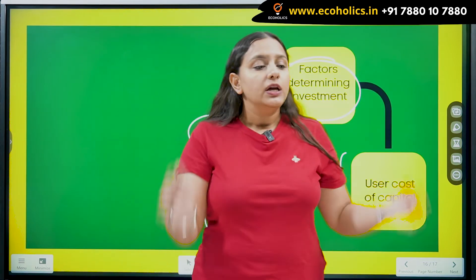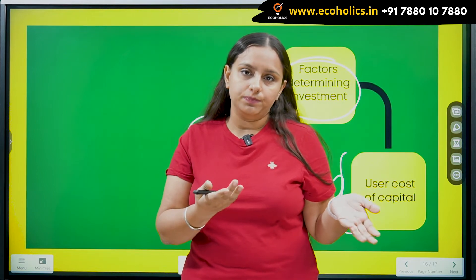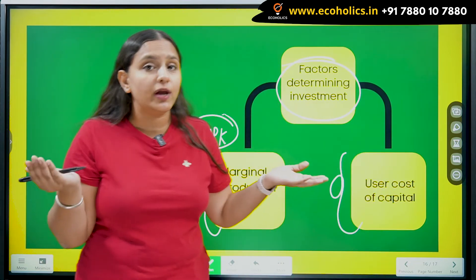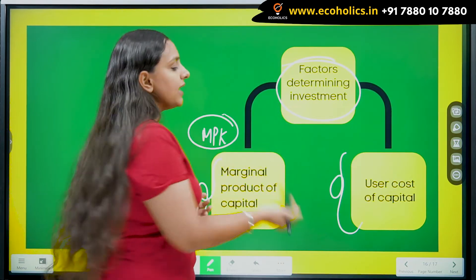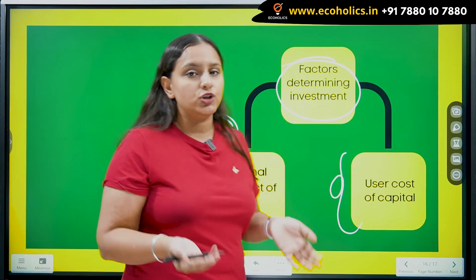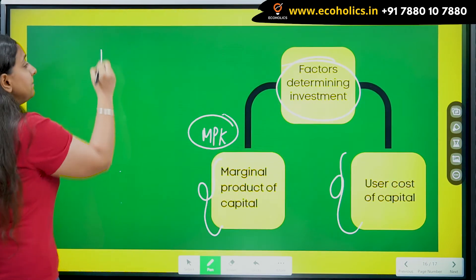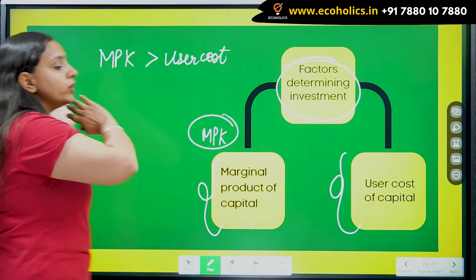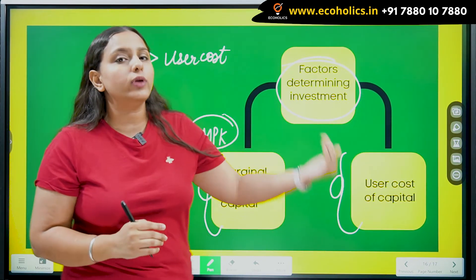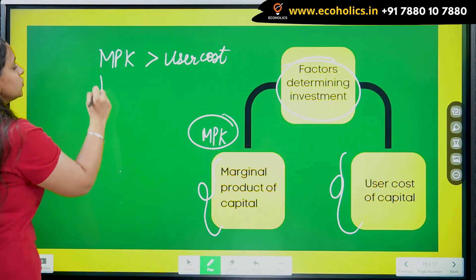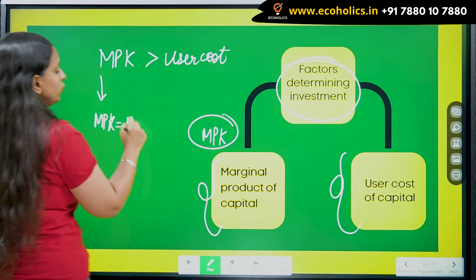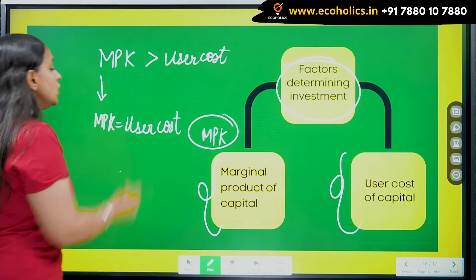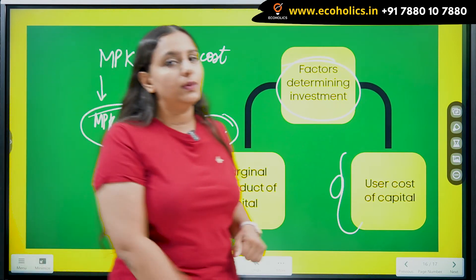Next we have the user cost of capital. Whether we are purchasing capital or renting it, we have to pay some kind of cost for using that capital. If we are renting it, we have to pay a real rental price — adjusted for prices — which is our user cost of capital. In an ideal situation, I would always want my MPK, the additional output that capital creates, to be greater than the user cost of capital. But if that is the case, I will keep investing in more and more capital units. This process stops as soon as MPK equals user cost, because beyond that point, user cost may exceed MPK. That is the point where I have my optimum desired level of capital stock.